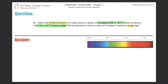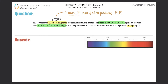We'll answer the first question first — we have to find the threshold frequency. The threshold frequency is the minimum frequency needed to produce the photoelectric effect. It's the minimum frequency required in order to produce a photoelectric effect, which is a phenomenon in both physics and chemistry.